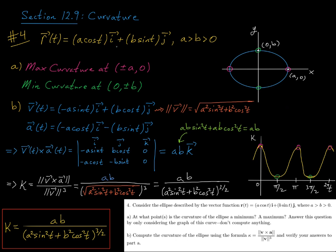And at those values of t, right, the multiples of pi, our i component is plus or minus a, and our j component is zero. So in other words, we're at this point a comma zero, or at this point negative a comma zero.